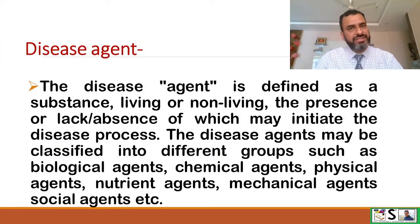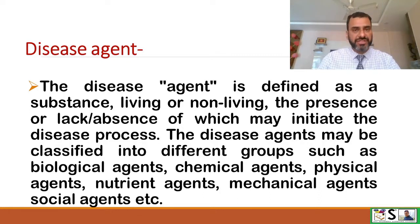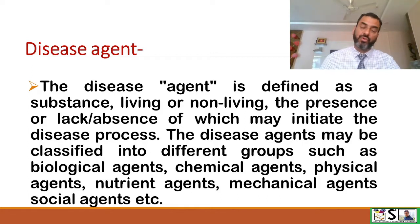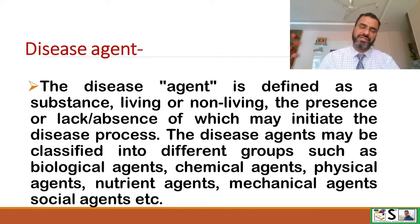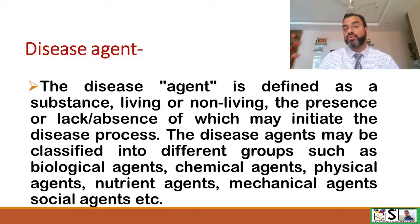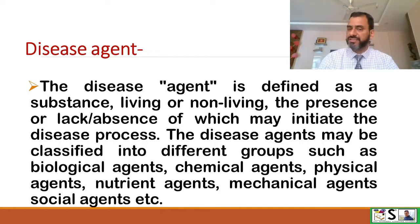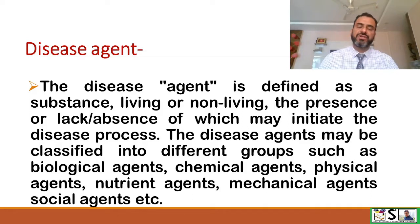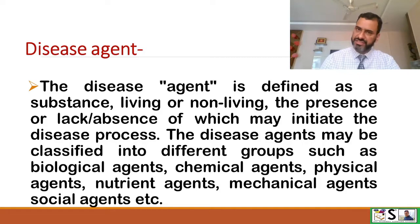What is a disease agent? The disease agent is defined as a substance, living or non-living, whose presence or lack or absence may initiate the disease process. Disease agents may be classified into different groups such as biological agent, chemical agent, physical agent, nutrient agent, mechanical agent, or social agent, etc.